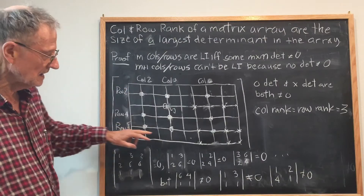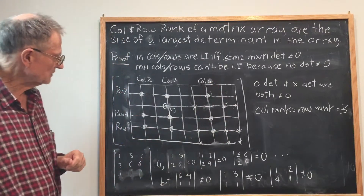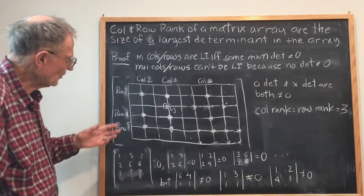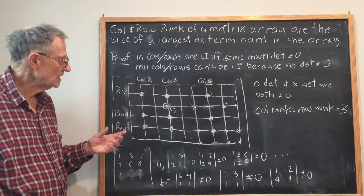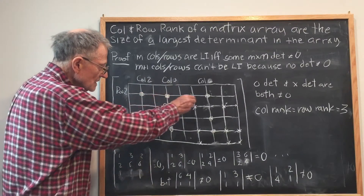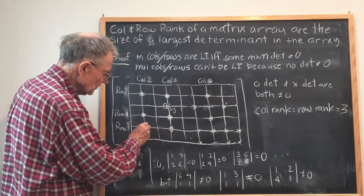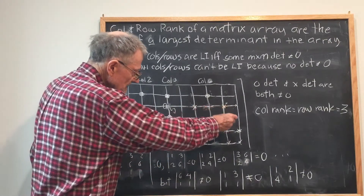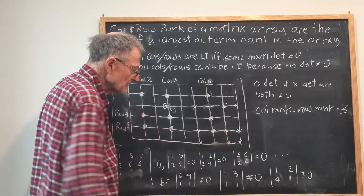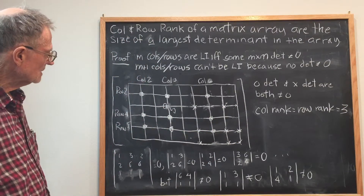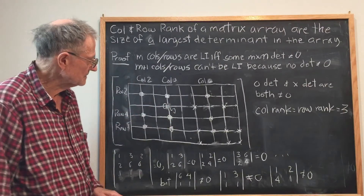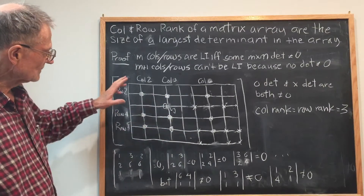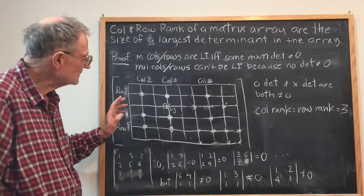As an example, I sketched out an arbitrary matrix array here with a typical element a_ij, and pointed out two determinants that are the largest in the array. The determinant formed by the elements at the location of these circles is unequal to zero, and also the determinant formed by the crosses — this 3 by 3 determinant — is also unequal to zero, which means that the rows and the columns belonging to either of these 3 by 3 arrays or determinants are linearly independent.